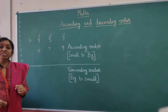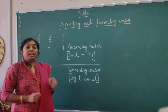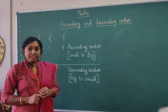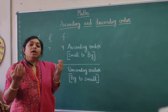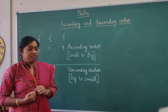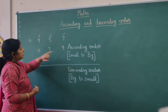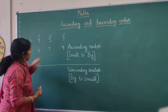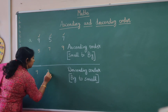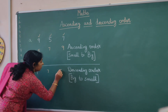This way we can arrange these numbers in ascending order: 5, 7, 9. For descending order, it is just the opposite. 5 is the smallest and 9 is the biggest, so let us write this in reverse: 9, then 7, and then 5.